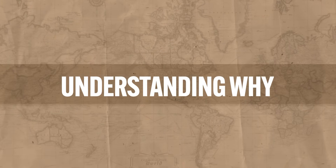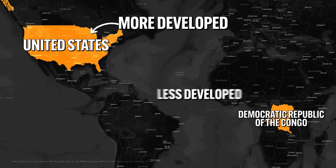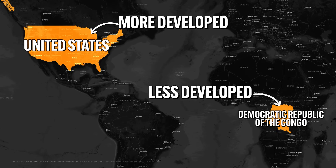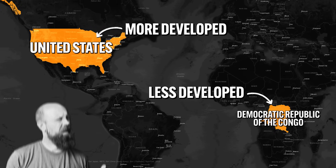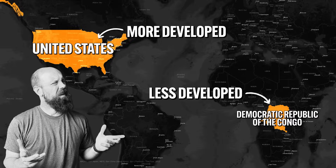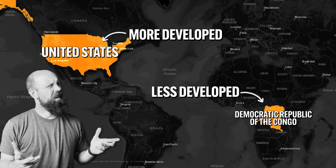There are four theoretical frameworks human geographers have developed to try to understand why countries at various levels of development are where they are on the globe. But before I start in on the four theories that you need to know, let me explain with a visual why this concept is important in the first place. This country is more developed while this country is less developed, and the question isn't so much why they are at different levels of development, but why are those different levels of development explained by their geographical location?